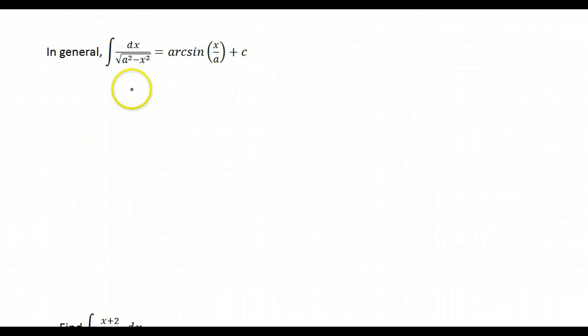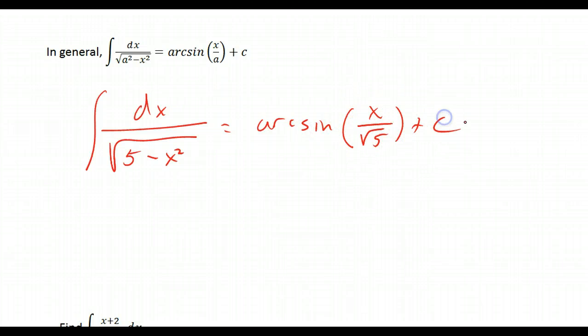So we can generalize that process. If you have 1 over the square root of a constant squared minus x squared, that's going to be the arc sine of x over that constant. So if you had the integral of dx over the square root of 5 minus x squared, then that would be the arc sine of x over the square root of 5 plus c. So if you know that rule, then it's a pretty simple process.